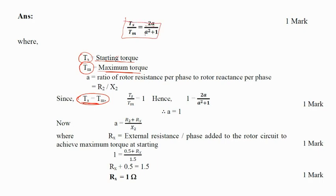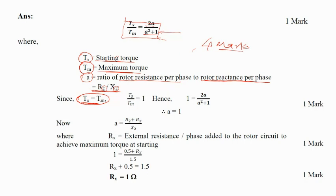We have the standard equation: the ratio of starting torque to maximum torque is 2a divided by (a² + 1). By deriving the ratio TS/TM we get 2a/(a² + 1). Here, 'a' is the standard ratio r2/x2, where r2 is rotor resistance per phase and x2 is rotor reactance per phase. You should learn this equation — TS to TM — as it is worth marks in the exam.